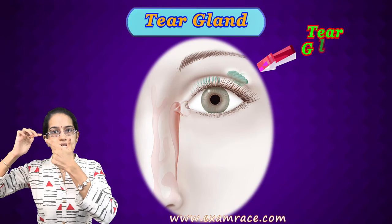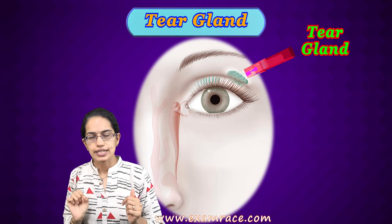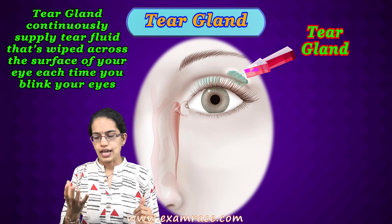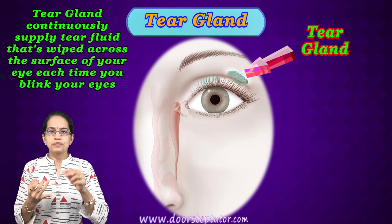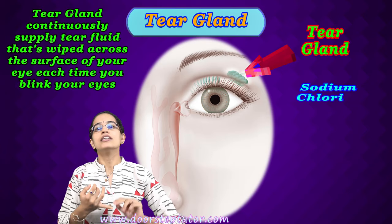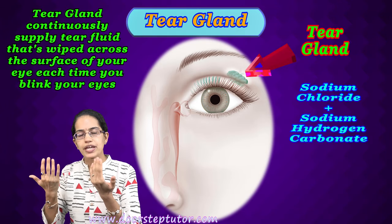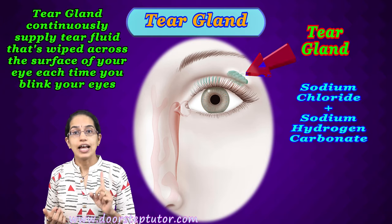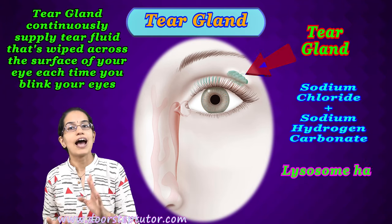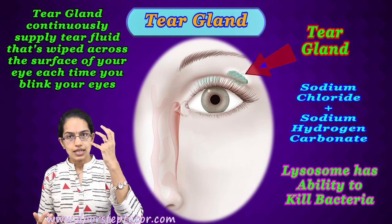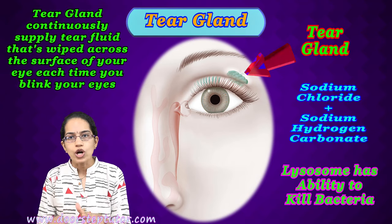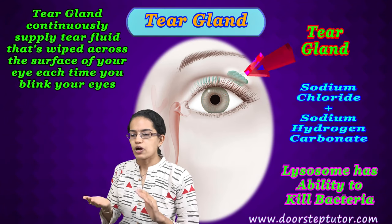The next important concept is tear glands. Just inside the eyelids, above the eye, we have the tear gland, which continuously secretes fluid that lubricates the eye. There are two advantages: first, it is a solution of sodium chloride and sodium hydrogen carbonate that helps wash away dust. Second, it contains lysozymes, which have the ability to kill bacteria, protecting the eye from bacterial infection.